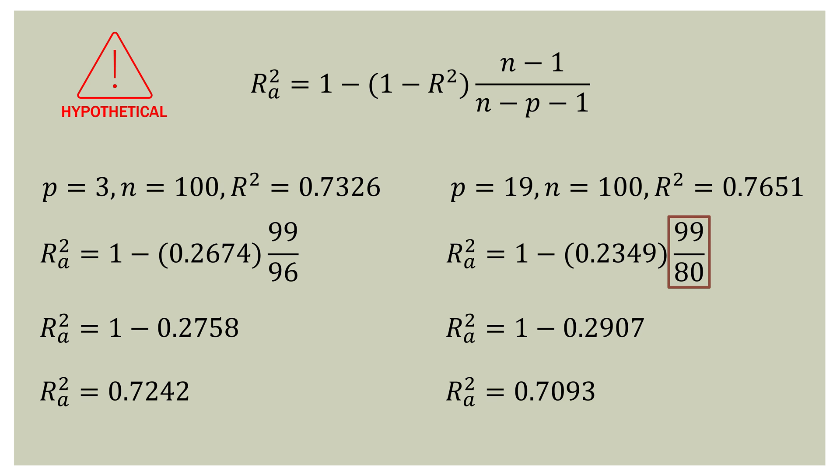Look at the fraction — that's where everything is happening. On the left with three variables, we have 99 divided by 96, which is close to 1. But on the right with 19 variables, we have 99 divided by 80, which is about 1.24. That's a huge increase in that multiplier. Adjusted R-square is a combination of the number of observations and the number of feature variables — you can see both in that fraction.